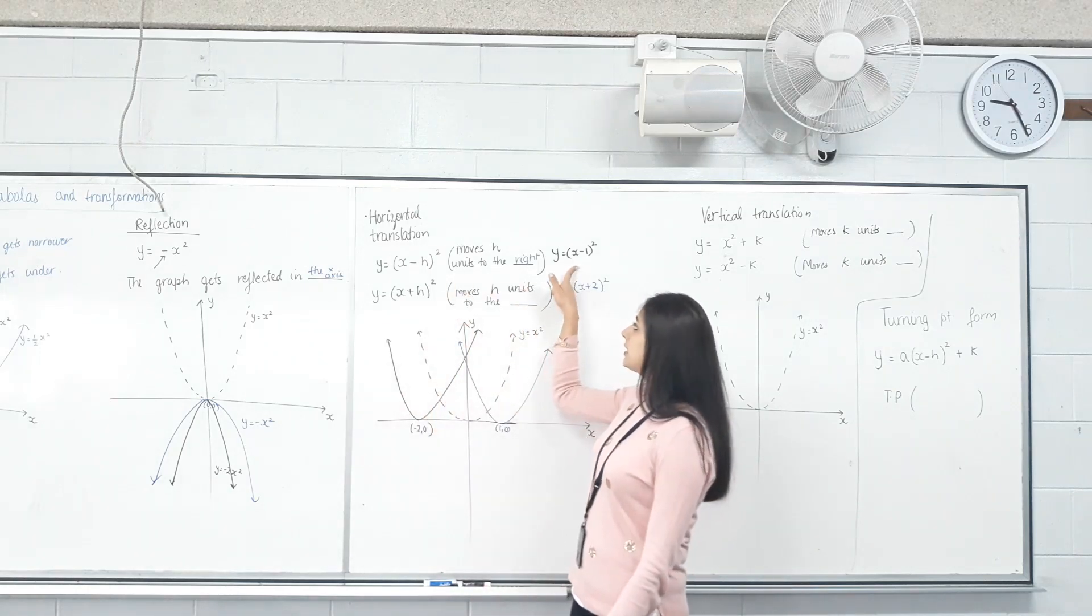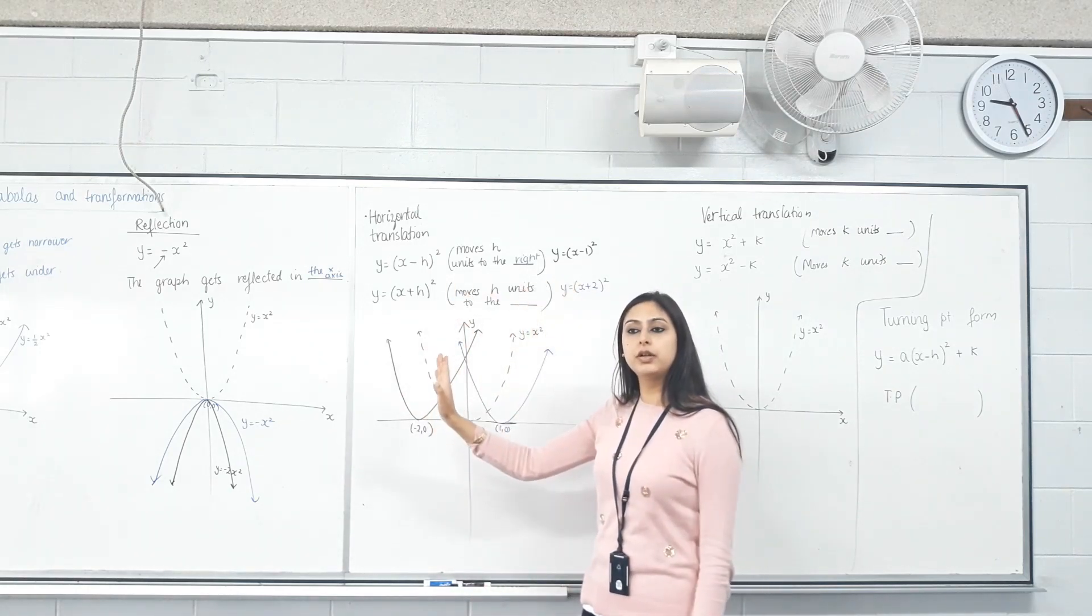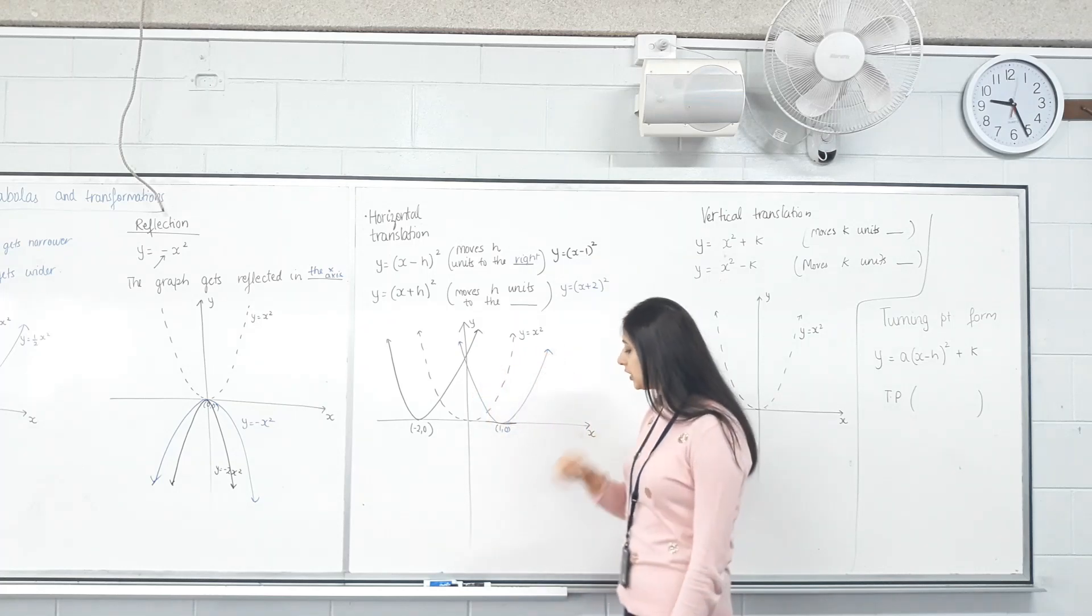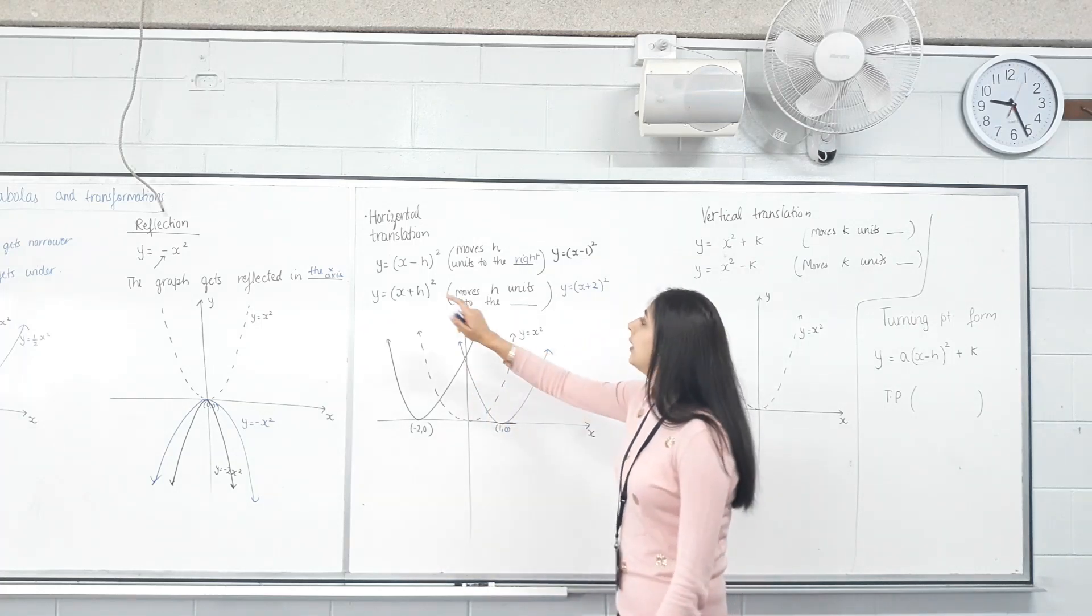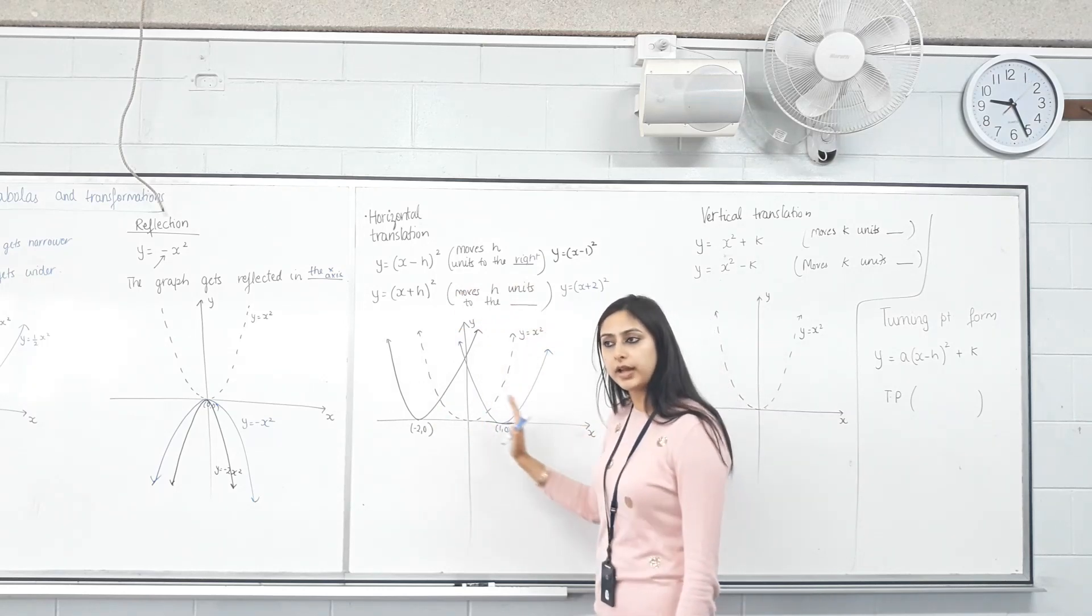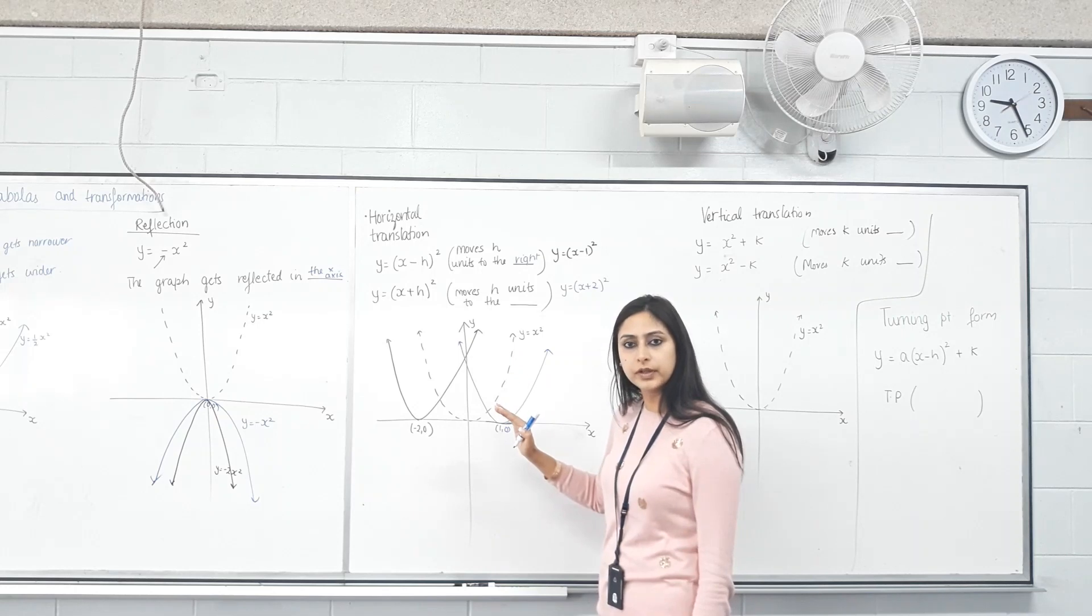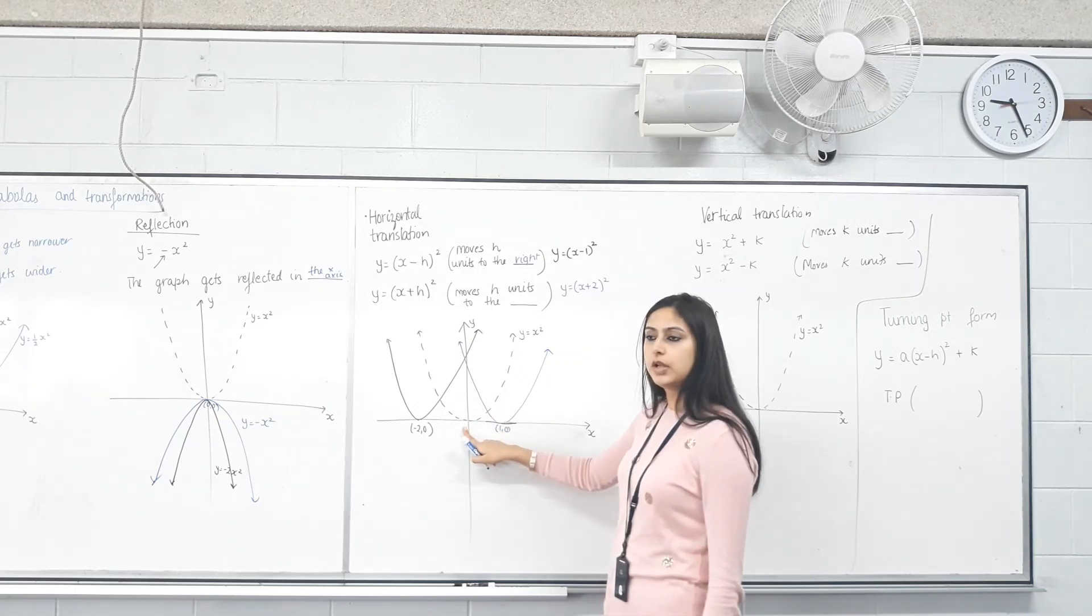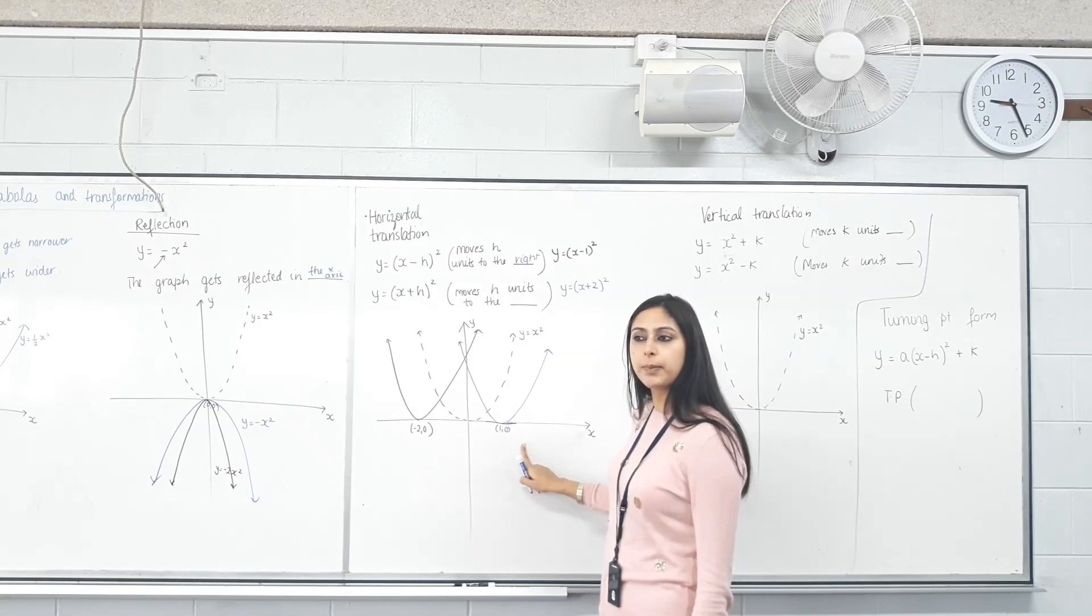So if it was subtracting something, the graph moved to the right. If it was adding something, the graph moved to the left. What happened to the turning point? The turning point—only the x-coordinate changed because the graph moved right or left. It didn't move up or down. The original turning point was (0, 0). The y-coordinate didn't change.